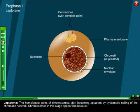Leptotene: The homologous pairs of chromosomes start becoming apparent by systematic coiling of the chromatin network. Chromosomes in this stage appear like a bouquet.